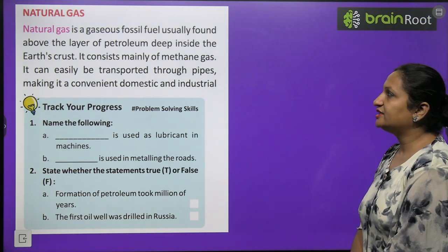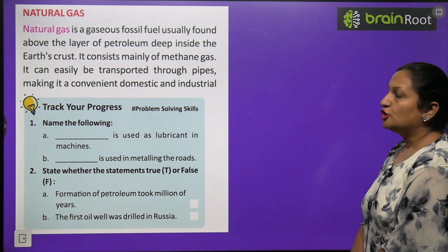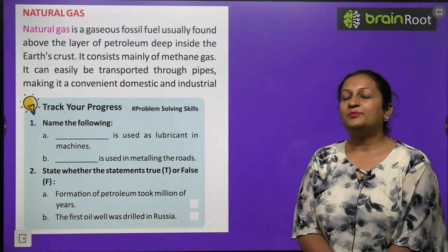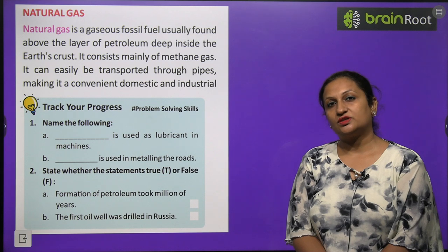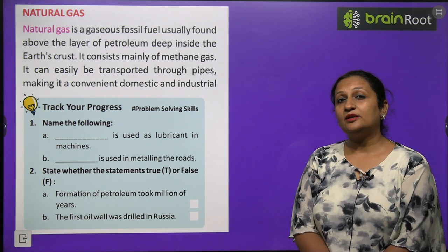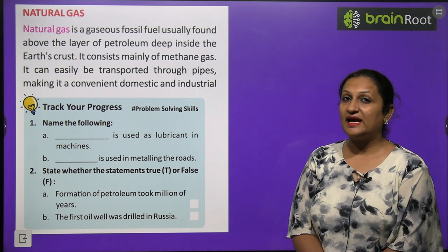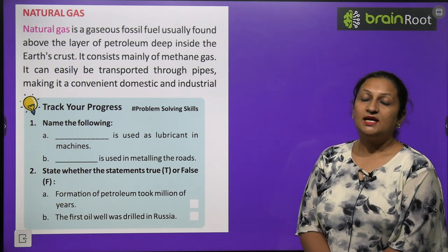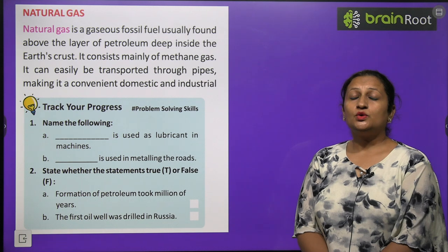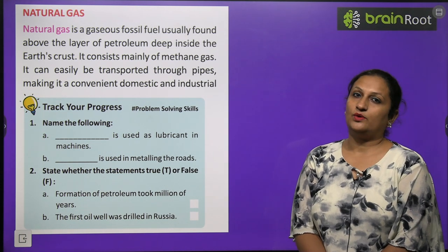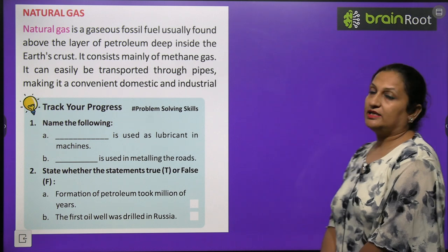Natural gas: it is a gaseous fossil fuel found above the layer of petroleum, deep inside the earth's crust. When drilling for petroleum begins, natural gas is the first to emerge. LPG (liquefied petroleum gas) is used at home, and CNG (compressed natural gas) is used in vehicles — both are forms of natural gas whose main ingredient is methane. It can easily be transported through pipes, making it a convenient domestic and industrial fuel.